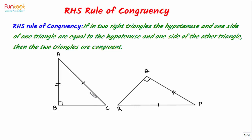The second condition is that corresponding hypotenuses should be equal. Here we can see that corresponding hypotenuses AC and RP are equal. The third condition is that one of the corresponding sides must be equal. Here we can see that AB is equal to PQ. Since all three conditions are satisfied, triangle ABC and triangle PQR are congruent by RHS rule of congruency.